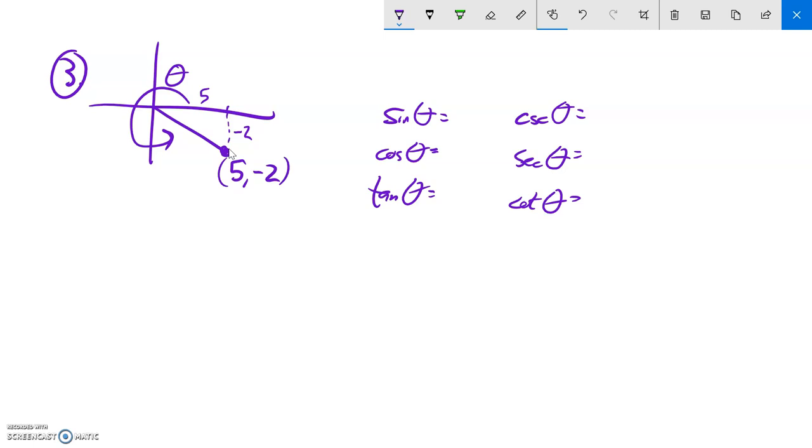Just from that bit of information alone, we know the tangent already. The tangent should be negative 2 fifths, y over x. Cotangent would be the reciprocal of that.